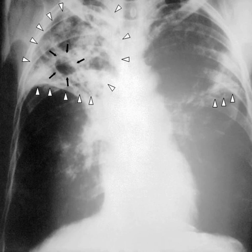Of these 1.45 million deaths, about 0.35 million occurred in those also infected with HIV. Tuberculosis is the second most common cause of death from infectious disease after those due to HIV/AIDS. The total number of tuberculosis cases has been decreasing since 2005, while new cases have decreased since 2002. China has achieved particularly dramatic progress, with about an 80% reduction in its TB mortality rate between 1990 and 2010. The number of new cases of tuberculosis has declined by 17% between 2004 and 2014.